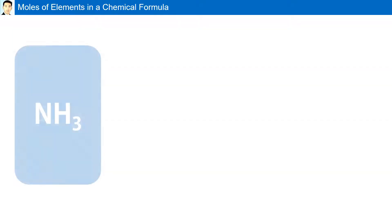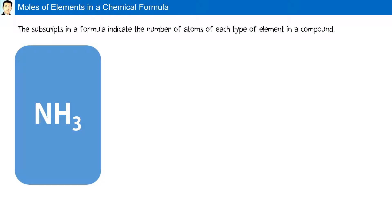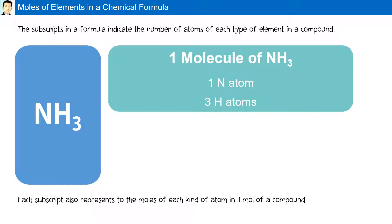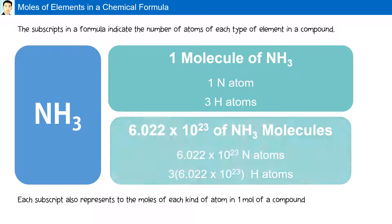Moles of elements in a chemical formula. For example, NH3. The subscripts in a formula indicate the number of atoms of each type of element present in a compound. In one molecule of NH3, there is one nitrogen atom and three hydrogen atoms. Each subscript also represents the moles of each kind of atom in one mole of that compound. So for one mole of NH3 — 6.022×10²³ molecules — there are 6.022×10²³ nitrogen atoms and three times that amount, Avogadro's number multiplied by 3, of hydrogen atoms.